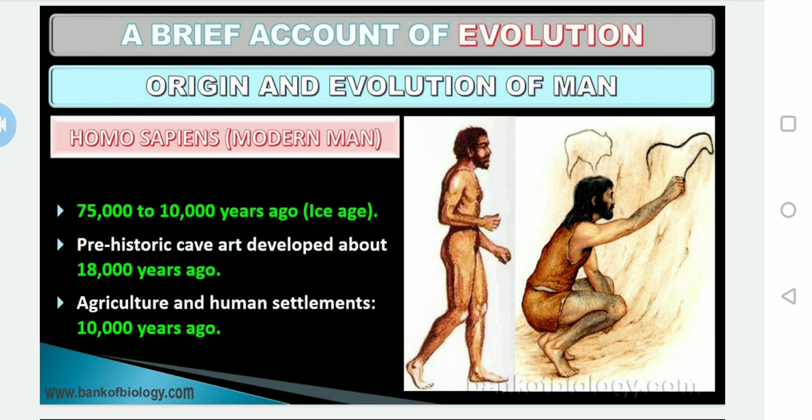He developed remarkable art found on cave walls. The overall pattern of human evolution extends over about five million years, during which Australopithecus evolved into Homo erectus, which eventually gave rise to Homo sapiens. Homo sapiens is believed to have evolved from Cro-Magnon. In NCERT, under modern man, Homo sapiens is given directly, but for competitive exams we should also know about Cro-Magnon.